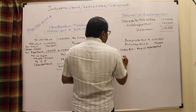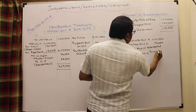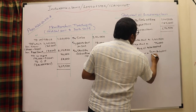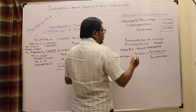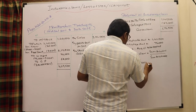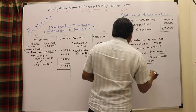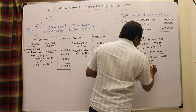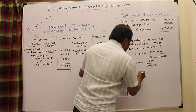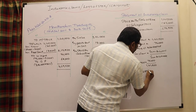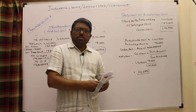Under-insurance — therefore average clause to be applied. Net claim = Gross claim × (Sum insured ÷ Sum insurable) = 1 lakh 14,500 × (75,000 ÷ 1 lakh 41,500) = 60,689. So the net claim in the given case is 60,689 rupees. This is the simple way to solve this problem.